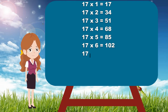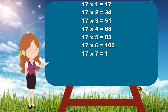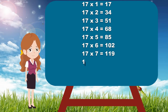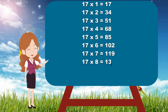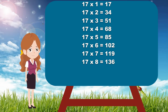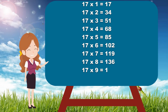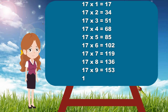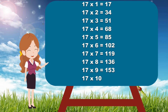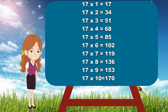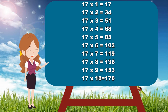17 sevens are 119, 17 eights are 136, 17 nines are 153, 17 tens are 170. Now children,